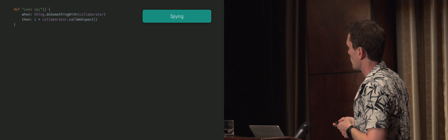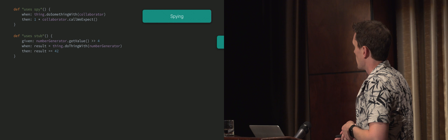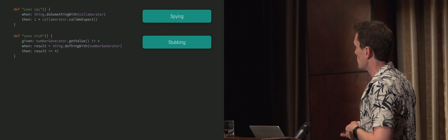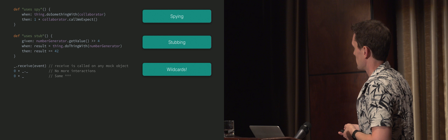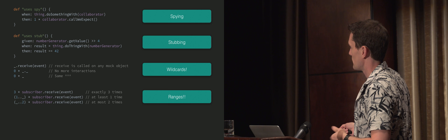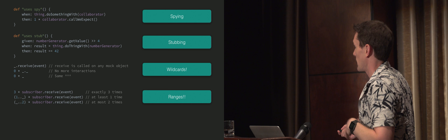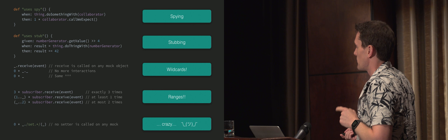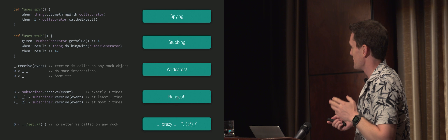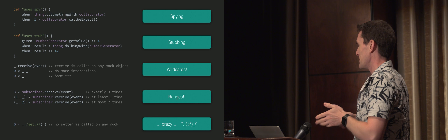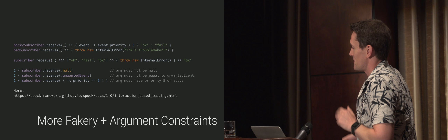It's got spying — for instance, I'm verifying that this thing must have been called once. It's got stubbing — I can say, well, if somebody calls this, return the number four. It's got wildcards with a nice natural way of doing it: underscores for wildcards. It's got ranges of things — so I could say this thing was called at least one time but up to who cares, or at most two times. It's flexible with nice syntax for this. It's also got some really crazy stuff — you can actually use regexes, though I wouldn't recommend it. But it's there.